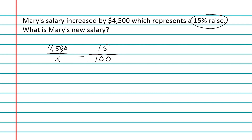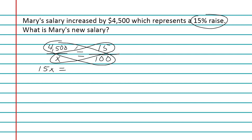We can now do cross multiplication to set up an equation. When you cross multiply, the product of one diagonal equals the product of the other. Multiplying 4,500 by 100 gives us 450,000. So 15 times x equals 450,000. To isolate x, we divide both sides by the coefficient 15.